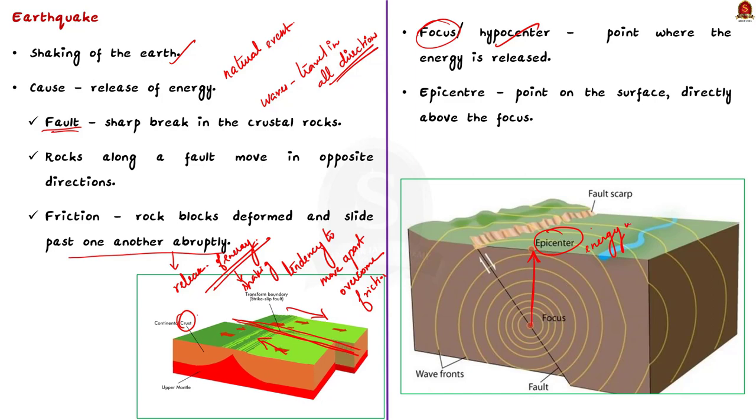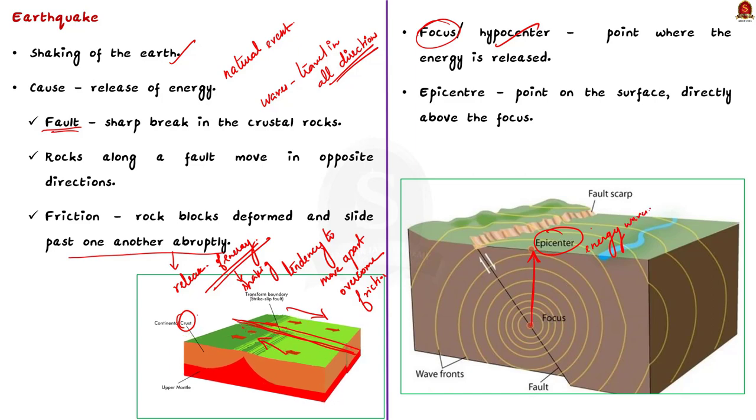Now, talking about the types, earthquake waves are basically two types. They are body waves and surface waves. Firstly, let us see about body waves. Body waves are generated due to the release of energy at the focus and they tend to move in all directions. Know that body waves travel throughout the body of the earth and then the body waves interact with the surface rocks and they generate new set of waves called the surface waves.